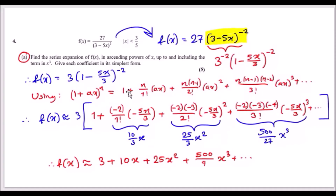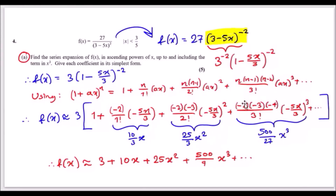Using the binomial series expansion, the general form has terms: 1, then n/(1!) × (ax), then n(n−1)/(2!) × (ax)², then n(n−1)(n−2)/(3!) × (ax)³, and so on. Here n = −2 and a = −5/3. The first term is 1, the second is (−2/1!) × (−5x/3), the third is (−2)(−3)/(2!) × (−5x/3)², and the fourth is (−2)(−3)(−4)/(3!) × (−5x/3)³.